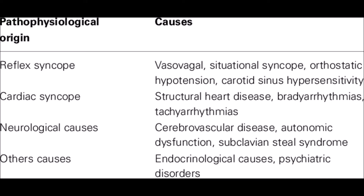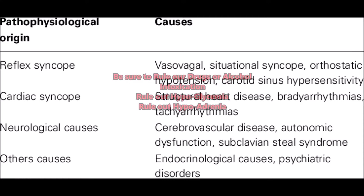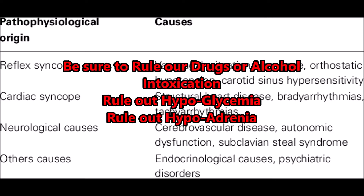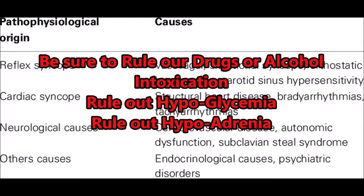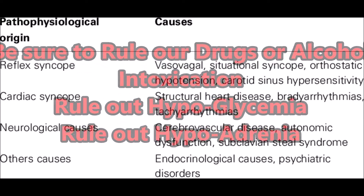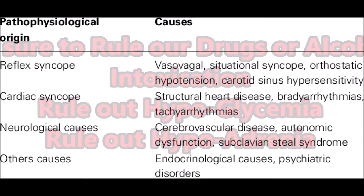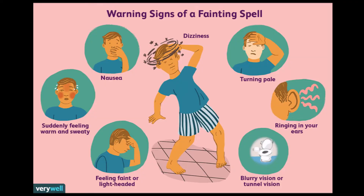Psychiatric disorders, endocrinological and hormonal disturbances can also be involved. So we have to recognize how to deal with this and maybe how to refer to a doctor. As we're dealing with it, we have to rule out drugs, alcohol intoxication, hypoglycemia, and hyponatremia. We have to understand the warning signs and this fainting spell that happens.